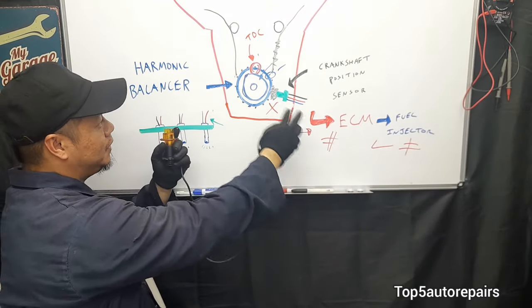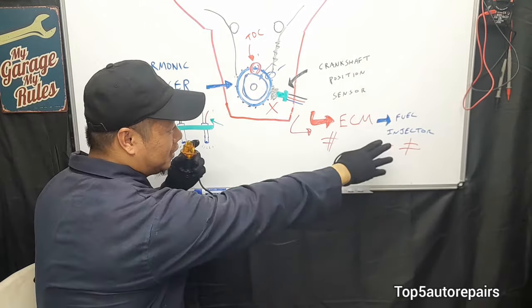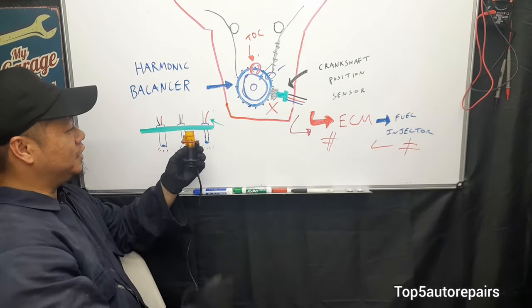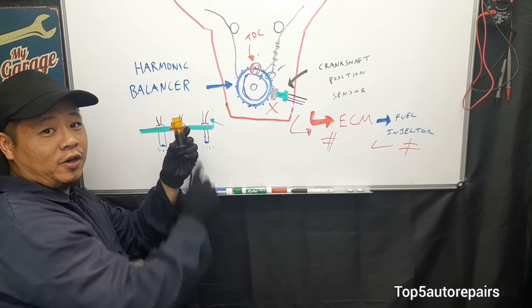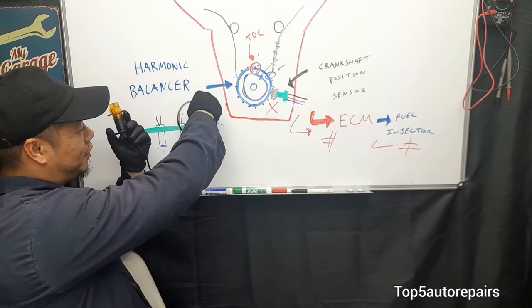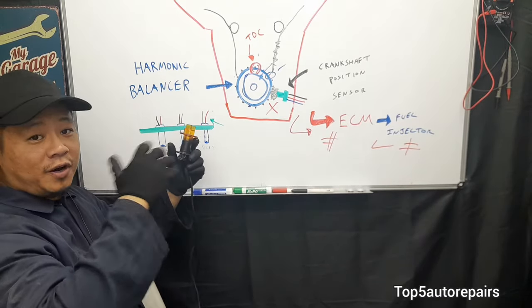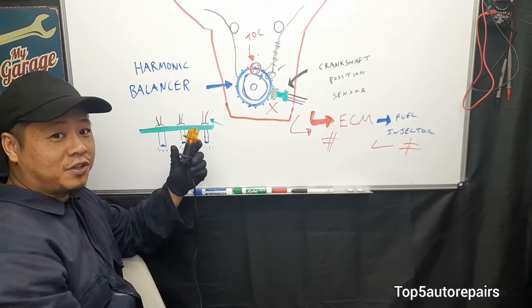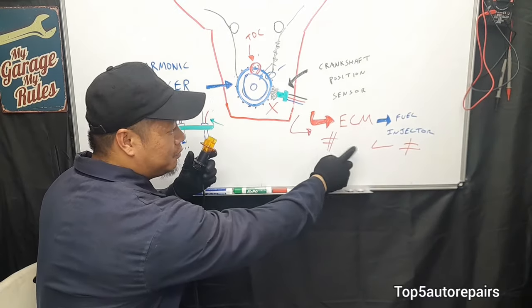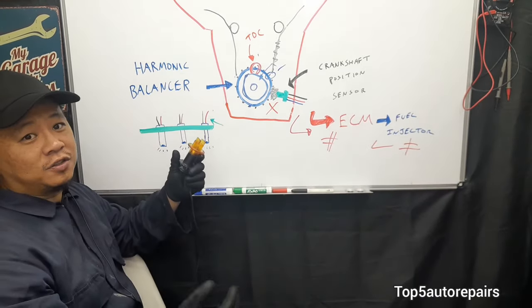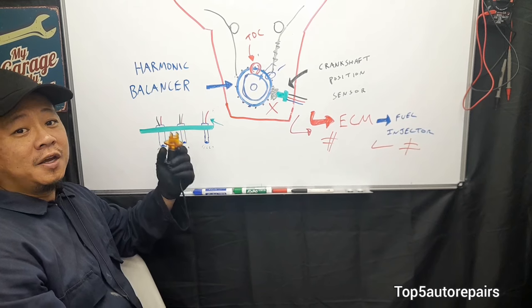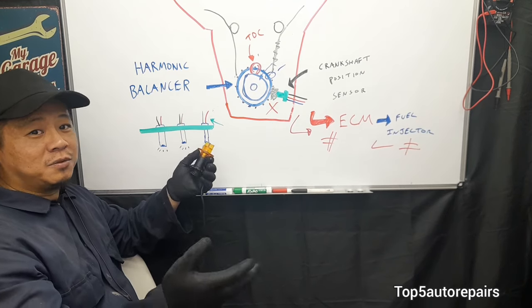every time it hits top dead center, a signal should be sent to the fuel injector. Every time that is sent, the noid light should flash. If you hook this up on the fuel injector and you're trying to start your engine and it doesn't flash at all, then you know it is missing that signal, and it's most likely caused by a bad crankshaft position sensor or some sort of interference.